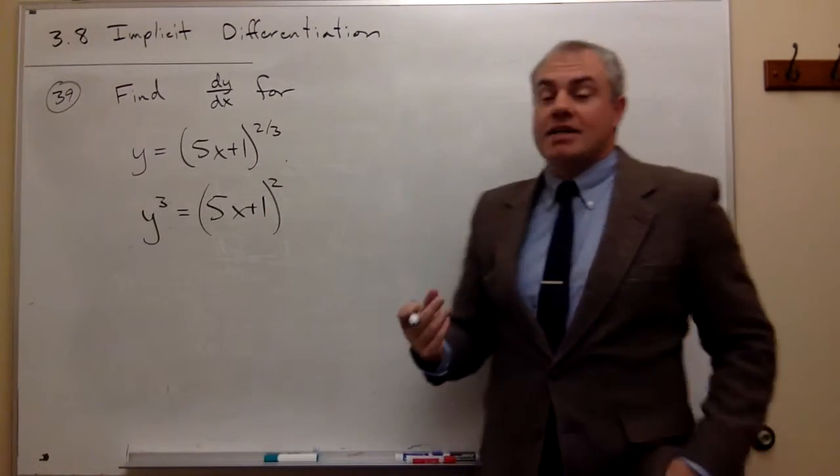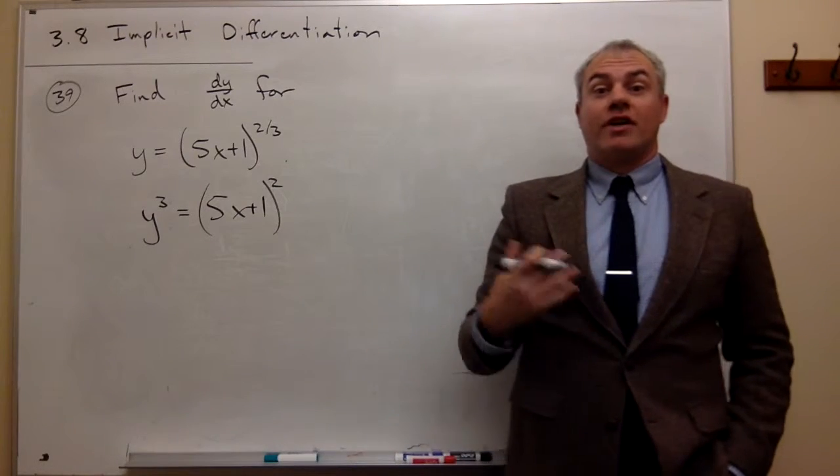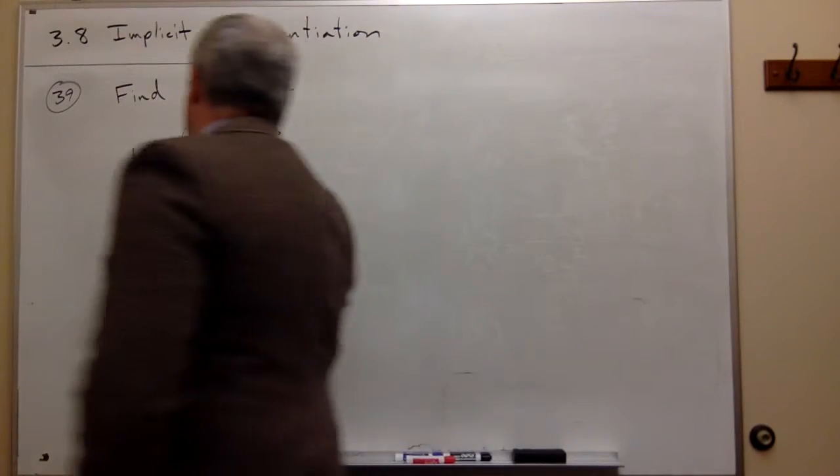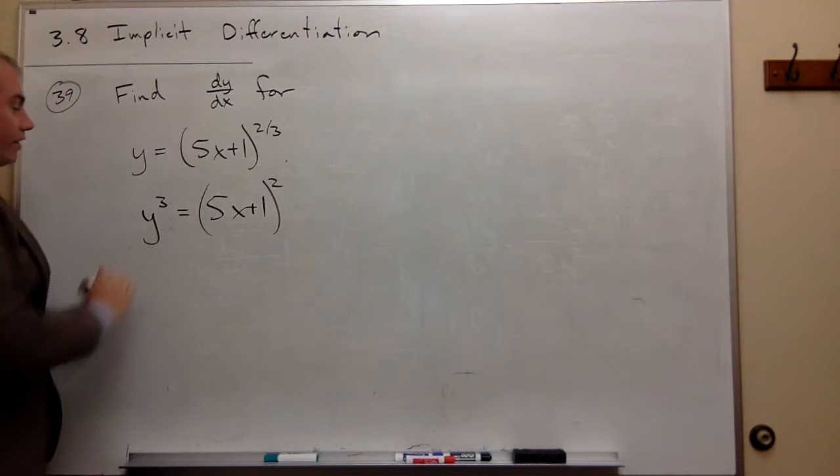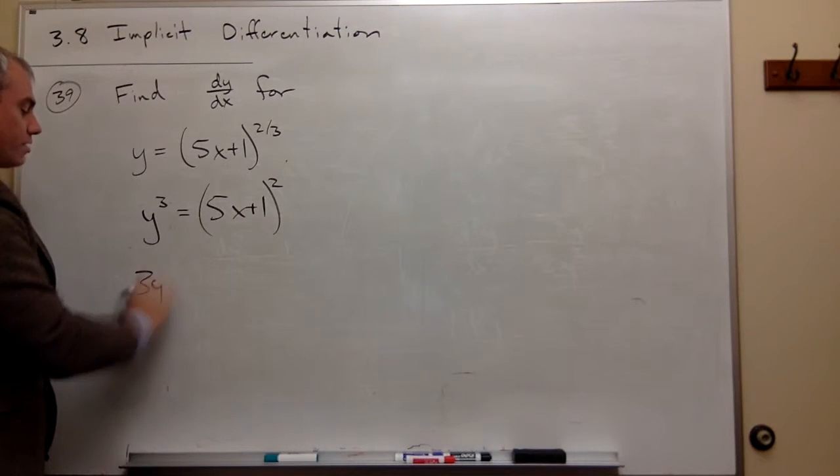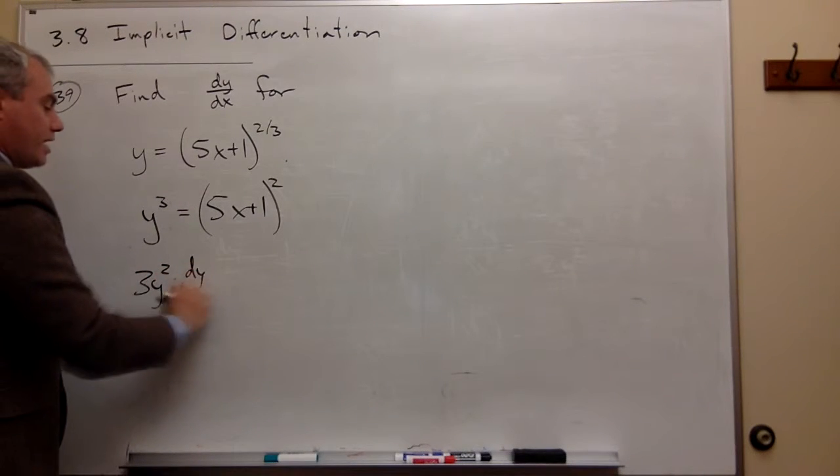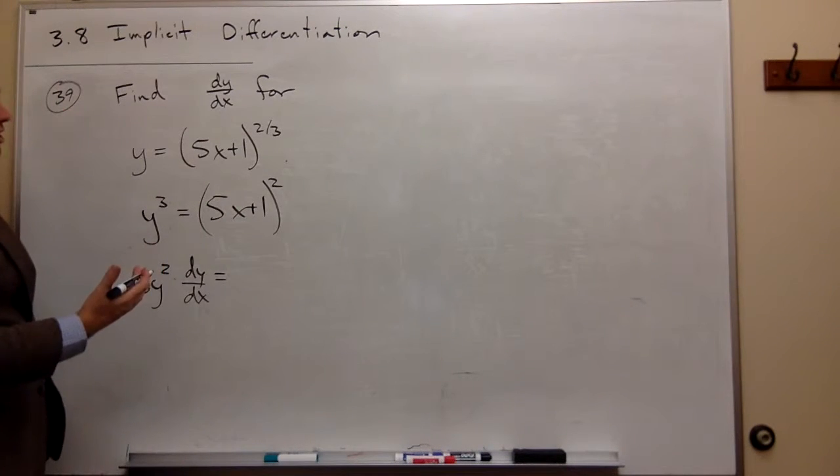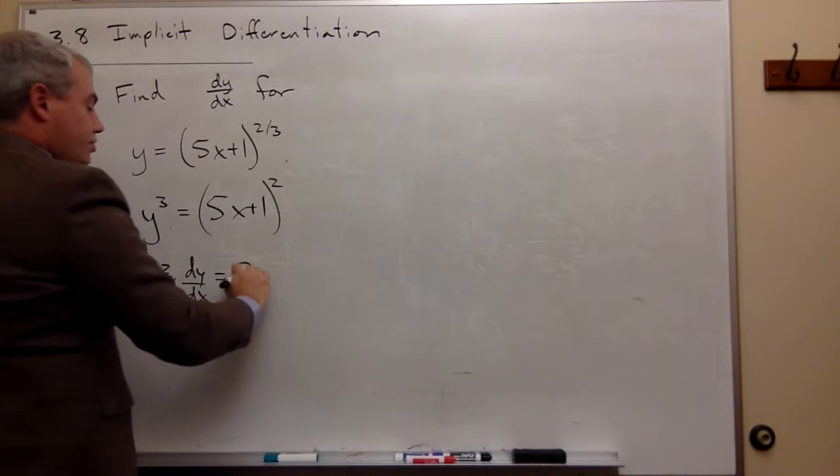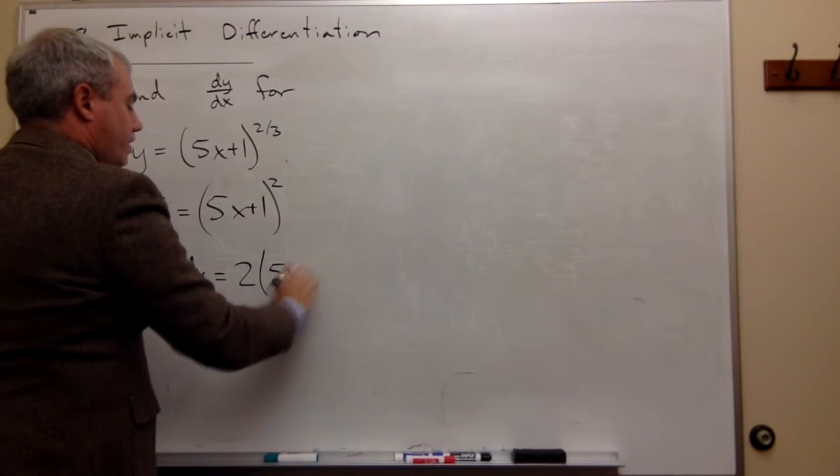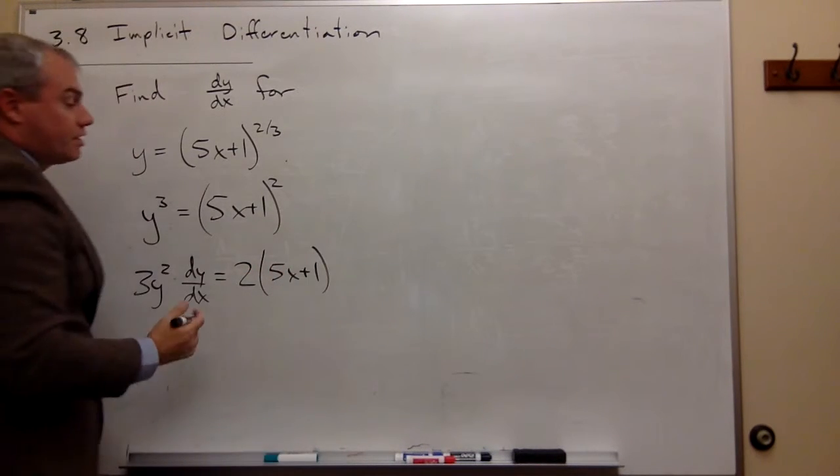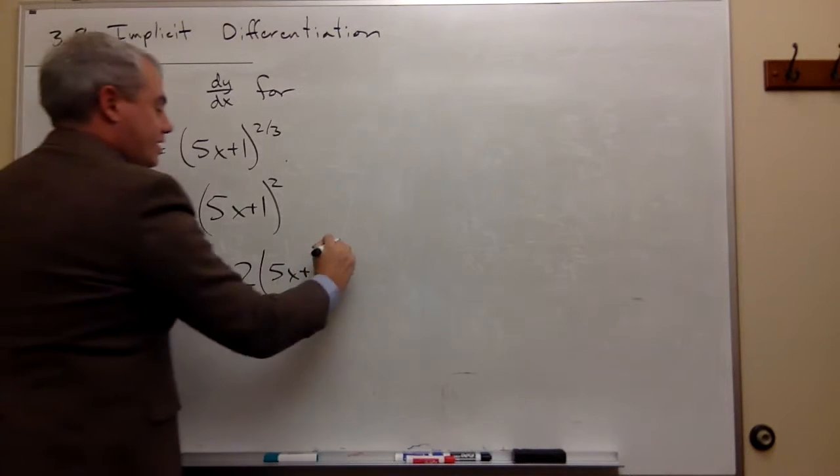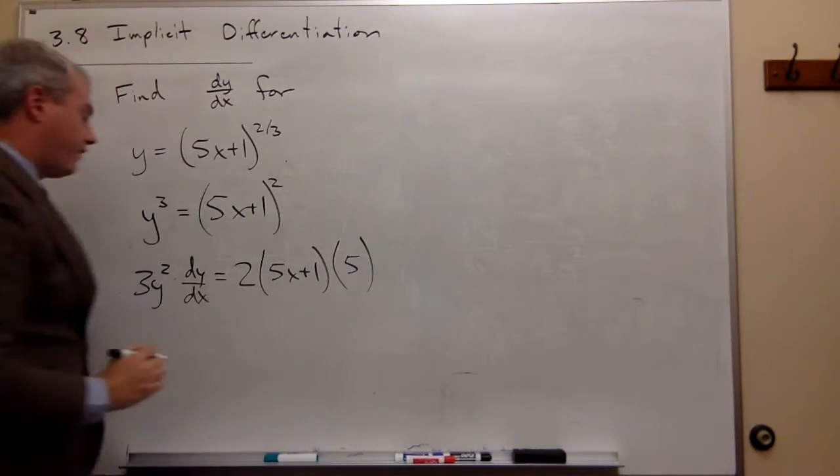Now I could take this derivative implicitly. If I do, taking the derivative of y³ is 3y² times dy/dx, and over here, the derivative is just a chain rule problem. It's 2 times (5x + 1) to the first times the derivative of what's inside, which is 5.